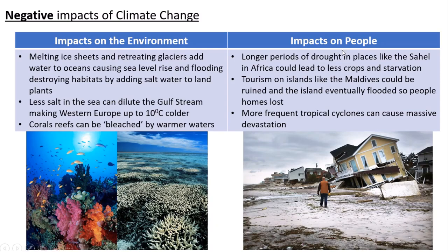Impacts on people include longer periods of drought in places like the Sahel, Ethiopia and California, leading to less crops, starvation and lack of income. Tourism on places like the Maldives or small island states will be effectively ruined because those islands won't be there anymore — they'll be flooded. People will lose their homes, and we're also going to get more frequent tropical cyclones, which cause huge devastation.